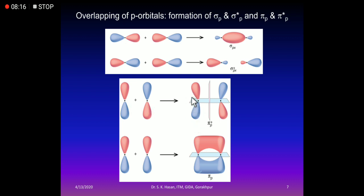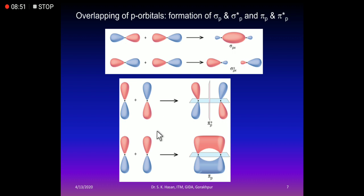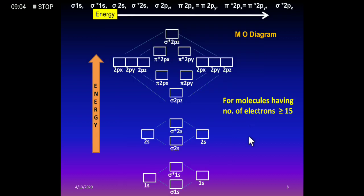After sigma bond formation via head-on overlap of px, the remaining py and pz orbitals form pi bonds through lateral (sideways) overlapping. So from p orbitals: σ(2px), σ*(2px) form from px; and π(2py), π(2pz), π*(2py), π*(2pz) form from py and pz. All atomic orbital combinations produce bonding and anti-bonding molecular orbital pairs in increasing order of energy.